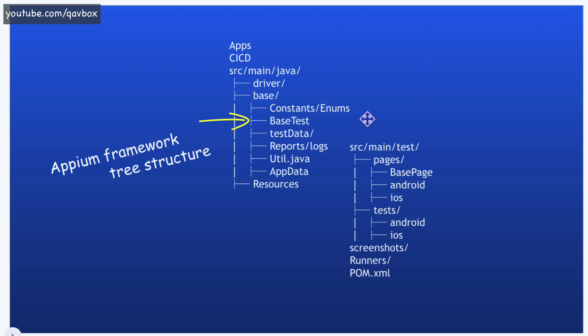The next component is the base test, which holds all the listeners — if you are familiar with TestNG listeners, before test, after test annotations, any of those concepts go here. Or if you are using Cucumber for writing and running test cases, it would hold all your hooks structure here. Test data management is also essential: any framework would hold test data, which could be a properties file, a JSON file, a .java file holding all the variables, or even an Excel sheet for multiple test data sets.